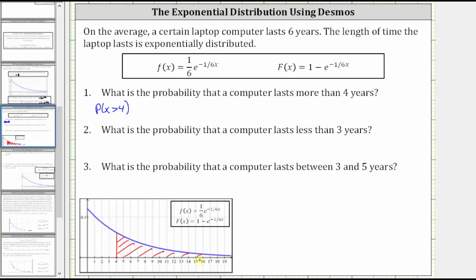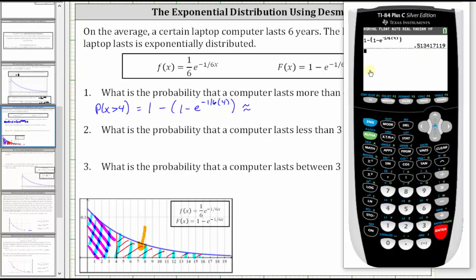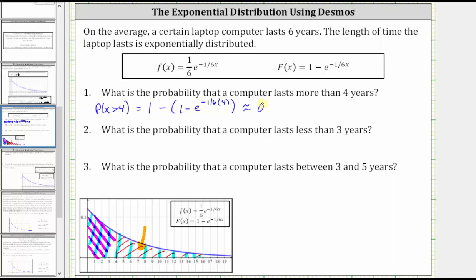The cumulative distribution function, F(x), gives the area to the left, not the right. Therefore, to find the area to the right of x equals four, we will first find the area under the entire curve — which we know is equal to one — and then subtract the area to the left of four given by the cumulative distribution function. So the probability that x is greater than four equals 1 minus (1 minus e raised to the power of negative (1/6) times 4), which is approximately 0.5134, or 51.34%.